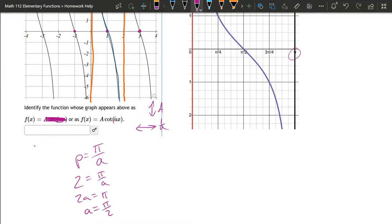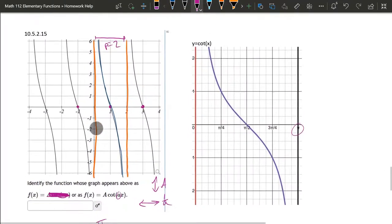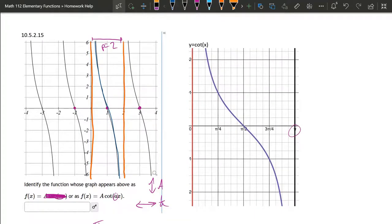Okay, so we just figured out little a. Now we're gonna get big A. So how do we get that? That one's a little bit more tricky, especially on this graph.